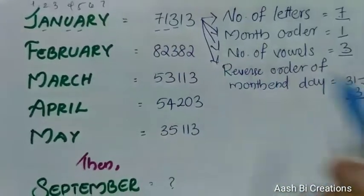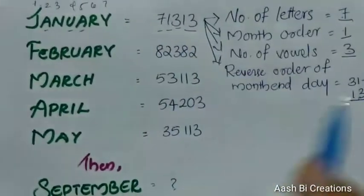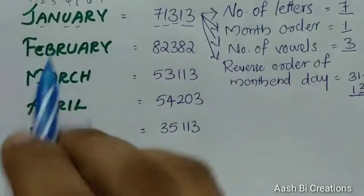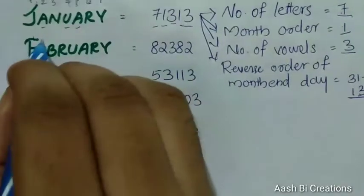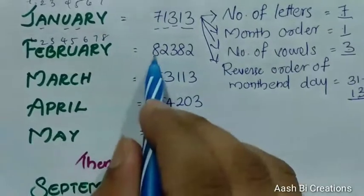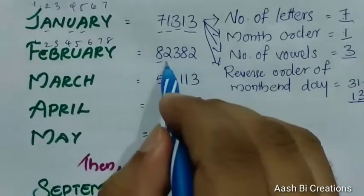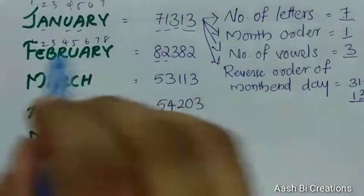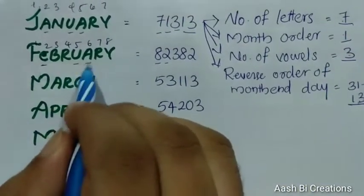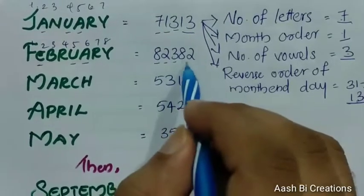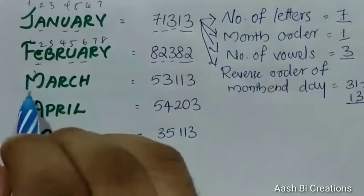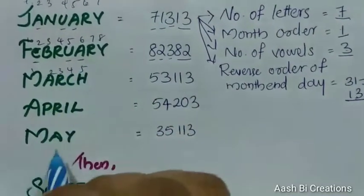1-3, all correct. Now check February — we will check the number of letters: 1, 2, 3, 4, 5, 6, 7, 8. Okay, that's correct. That's the month order — second month of February. Okay, that's the number of vowels: E, U, A — 3 is correct. That's the February days — we have 28 days. That's the reverse order: 8, 2. That's correct.